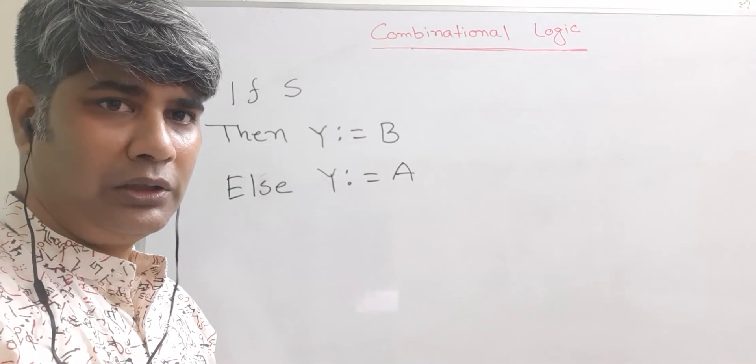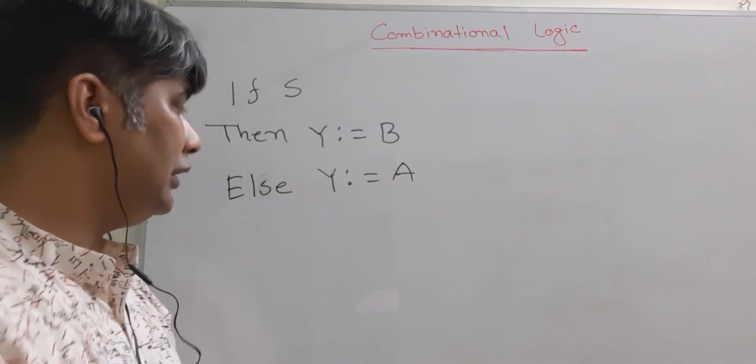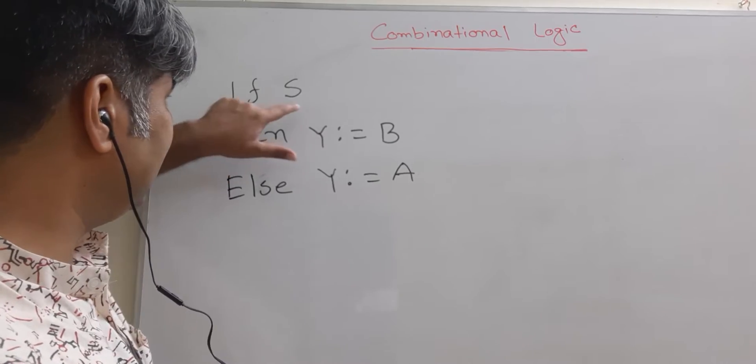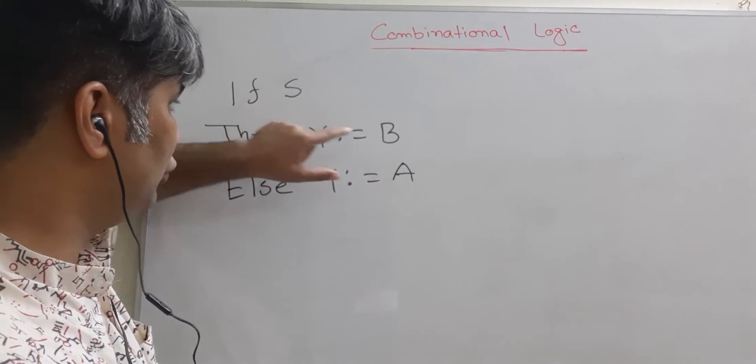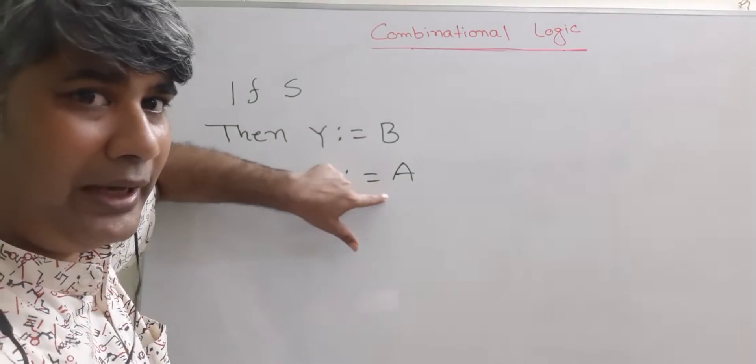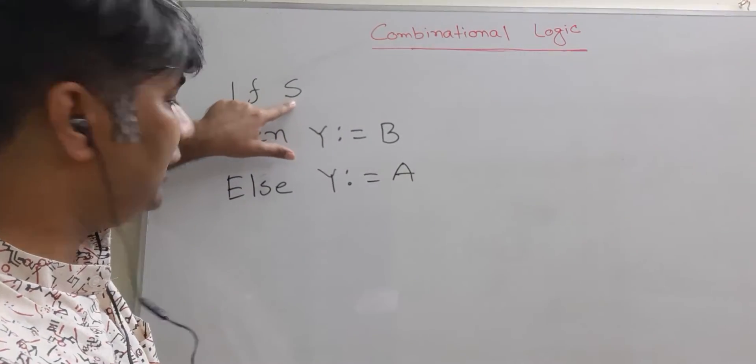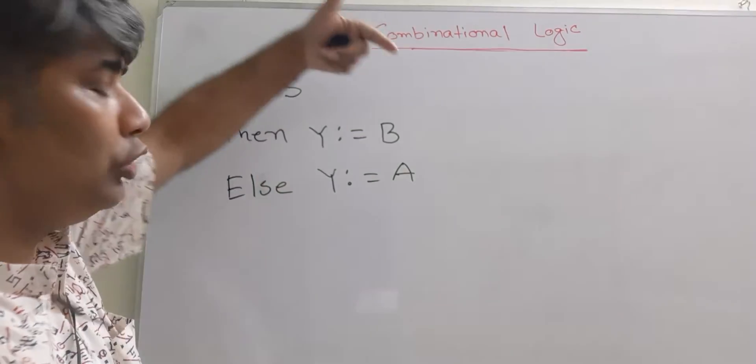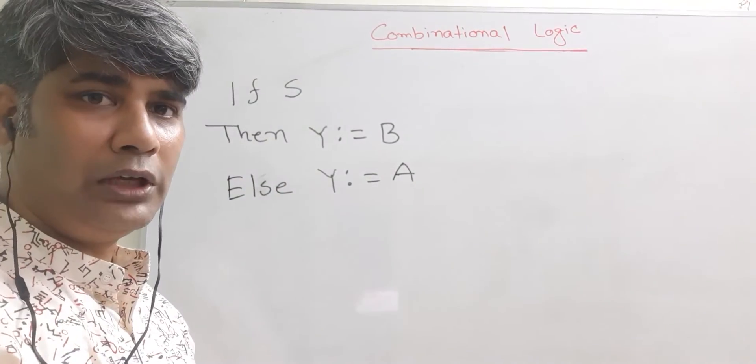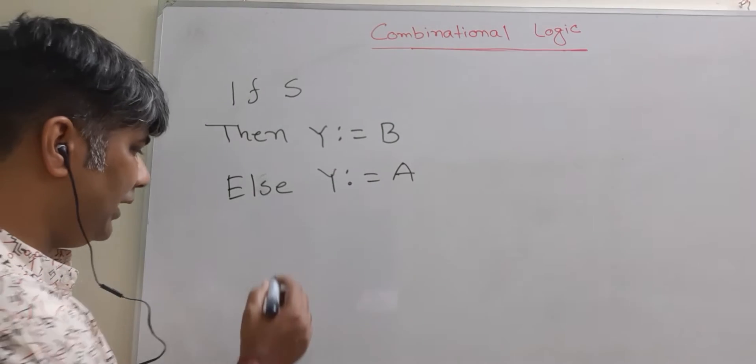If you look carefully, you would see that this S is controlling the output. It could be B or it could be A. That means this one is kind of selecting which one should go to the output. So the expression could be something like this.